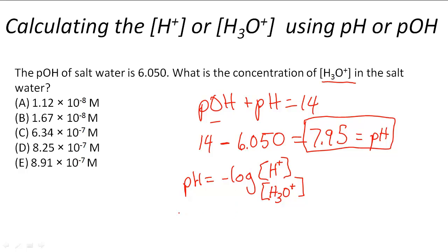To figure this out, we have to multiply both sides by negative 1. So this is going to become the log of the concentration of H3O plus. And then this is going to be equal to the pH that we found earlier, negative 7.95. Remember, it's very important to multiply both sides by negative.